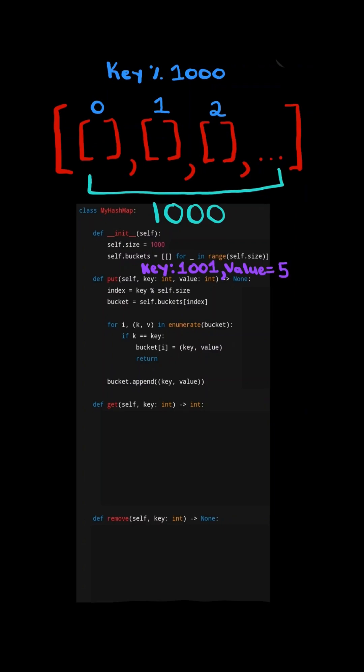For example, let's assume the key was 1,001 and value 5. We take the key 1,001 and mod it by 1,000, in which it equals 1, which means the key-value pair belongs to bucket 1. So we append the key-value tuple to the bucket.